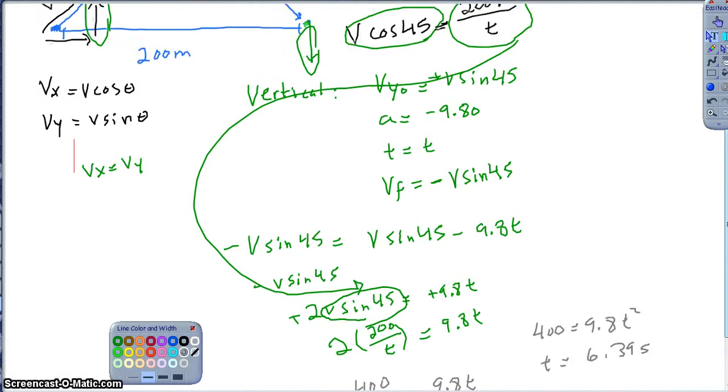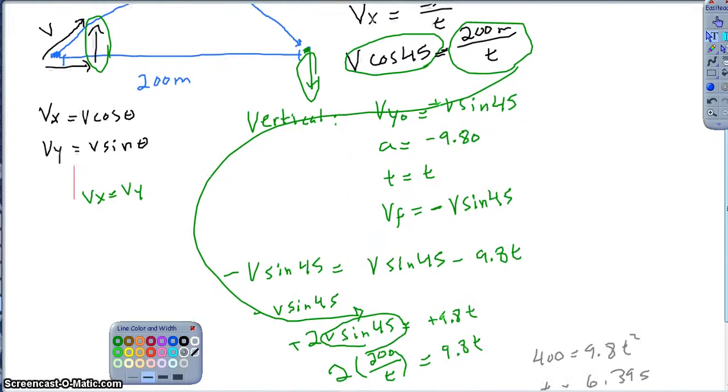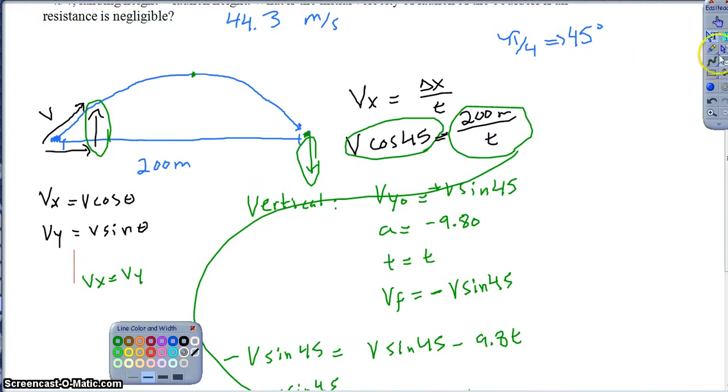Okay, so 6.39 seconds. It wanted us, though, to find the initial velocity of the object. And so now that I have the time, you could really come back to either one of these two equations that we had set up. But I'm just going to jump right up to this guy. So my velocity, V cosine 45, equals 200 over 6.39. And then just solving for V, which, keep in mind, this V actually represents the entire hypotenuse, right? The cosine is taking care of the fact that it's the X component, but that V represents the magnitude of the whole hypotenuse. So as I solve for this V, I am finding my total answer. So anyway, 200 divided by 6.39, and then dividing that by cosine of 45 as well, and that's where I got my answer of 44.3 meters per second.